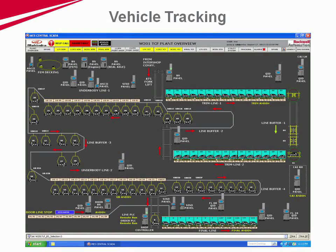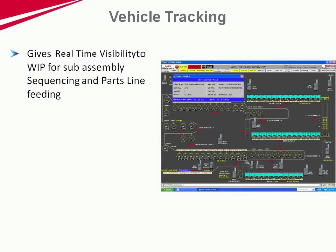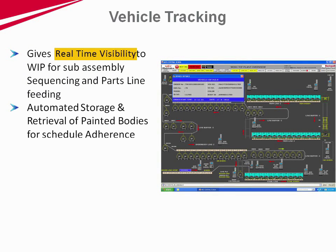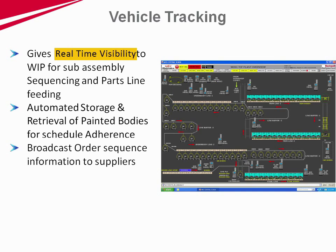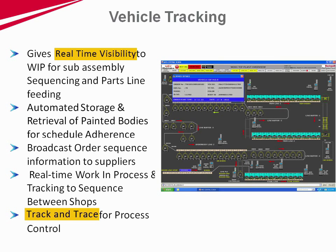MES starts tracking WIP from order start to dispatch, thus creating real-time visibility of work-in-progress inventory based on order start, process flow, material handling and the movement of the conveyor. This enables sequencing of parts on the line.